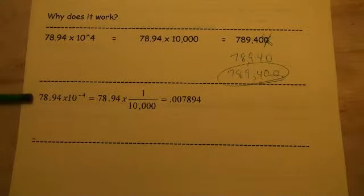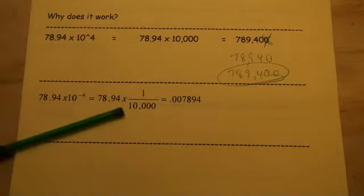Next one, if we took 78.94 multiplied by 10 to the negative fourth, that would be the same as 78.94 times 1 over 10,000. So if you need to look up negative exponents, please do so you can understand what that would mean. This is exactly what it means. We're going to be taking the 10, putting it in the denominator, and using the 10,000 in the denominator.